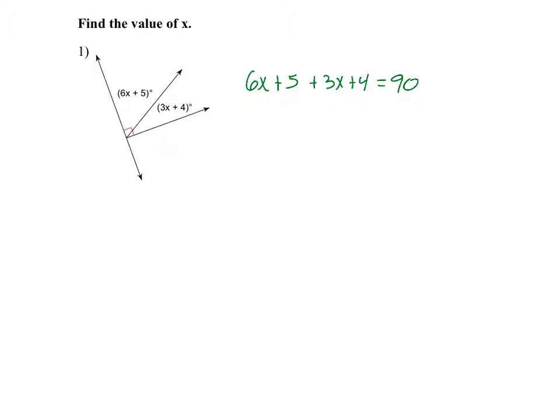So 6x plus 3x is 9x. 5 plus 4 is 9, equals 90. And I'm just going to subtract 9 on both sides. So 9x equals 81. And now I'm just going to divide. So x equals 9.